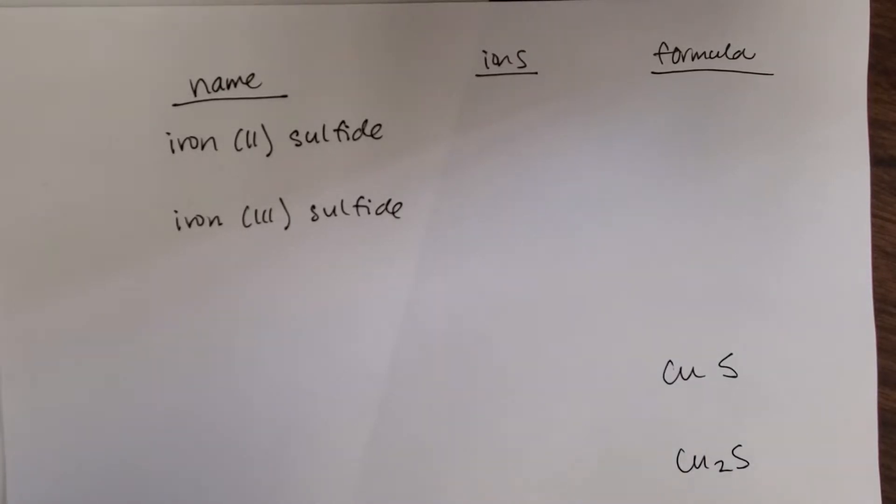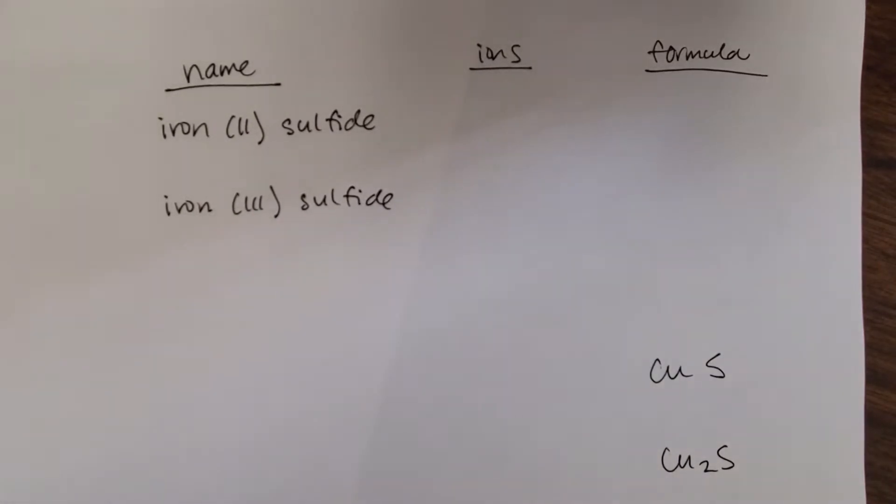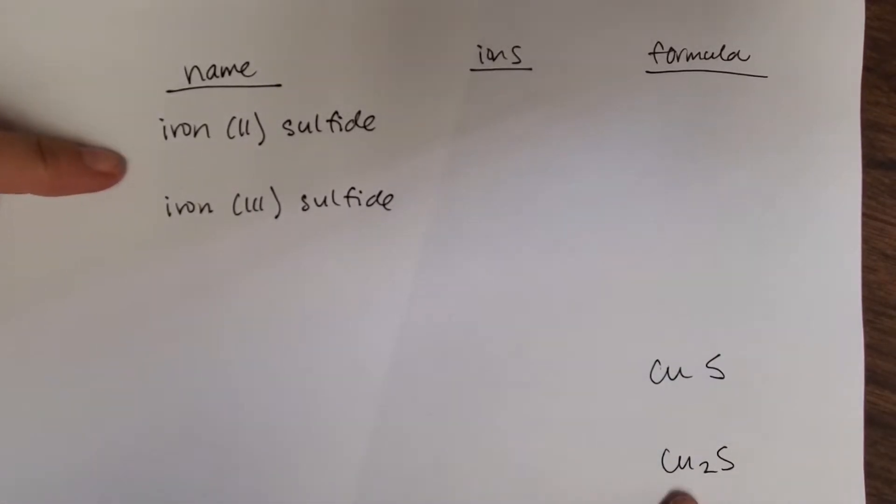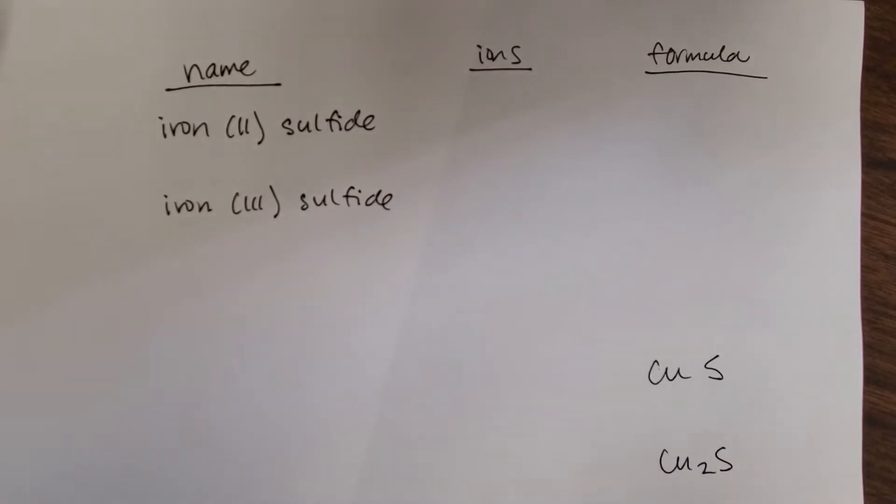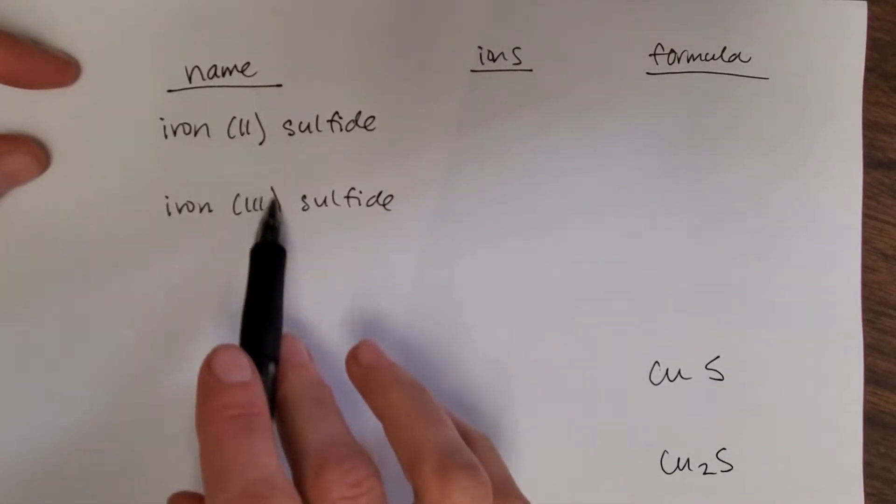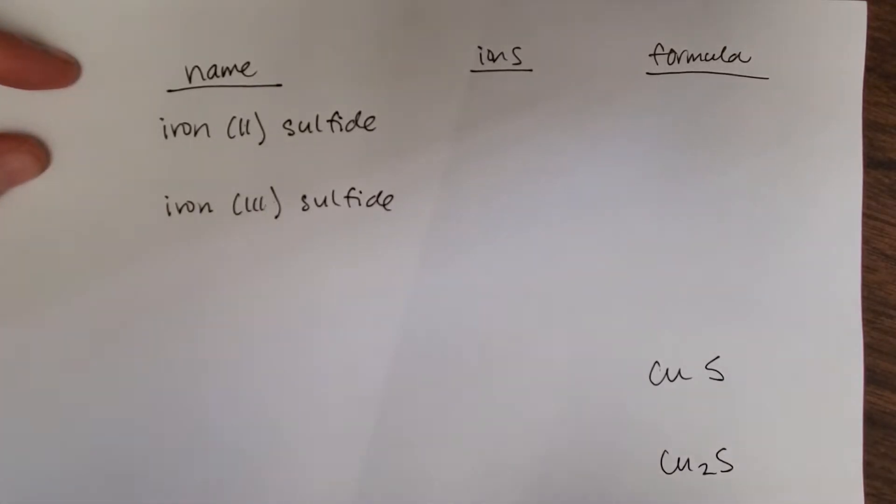We're going to work through a couple of these iron and copper names and formulas. A couple things to remember: both iron and copper, and other elements, but these are the only ones you have to worry about, can have two different charges. That means your formulas will look different and we need a way to say that in our names.